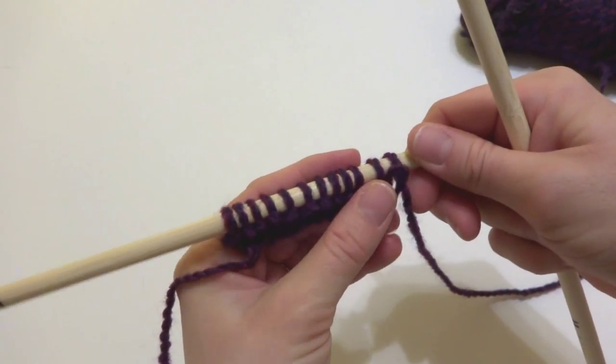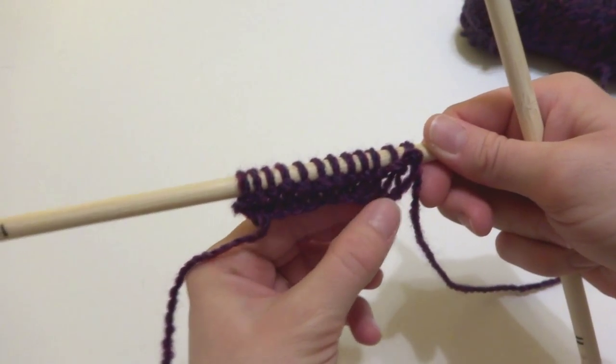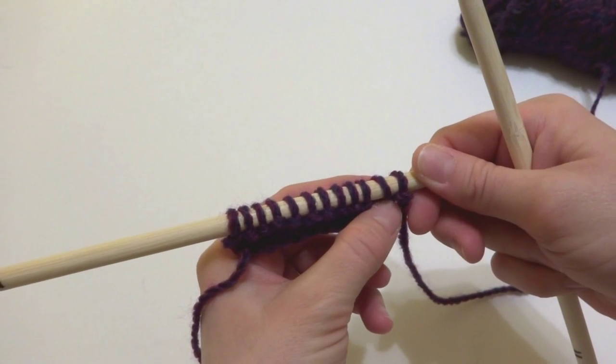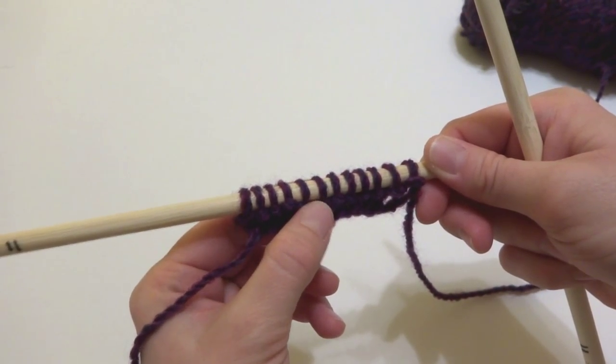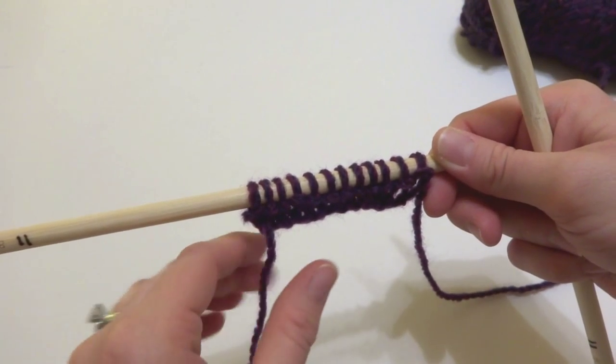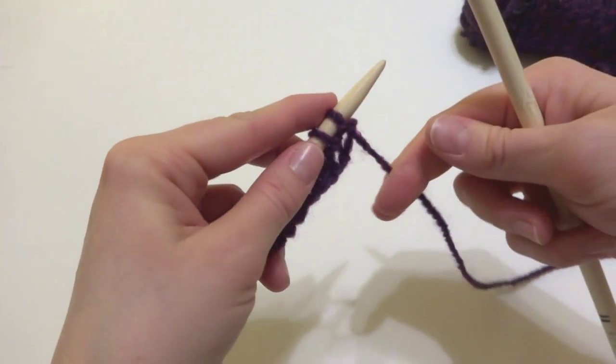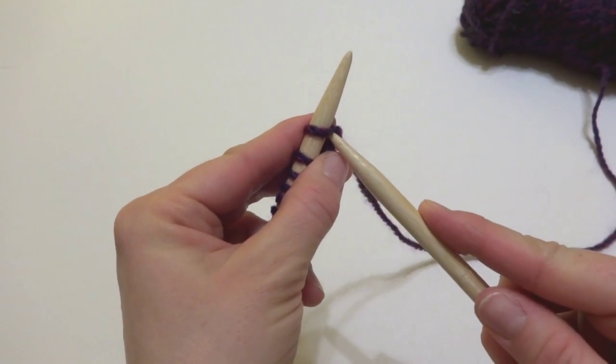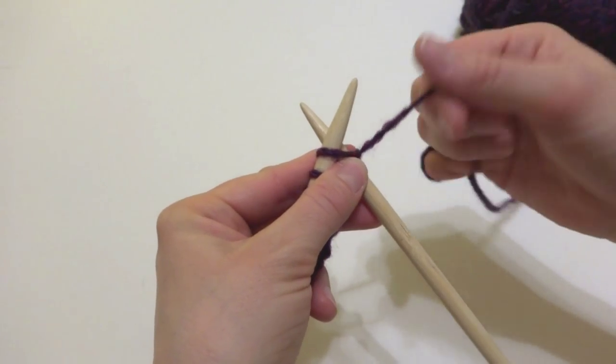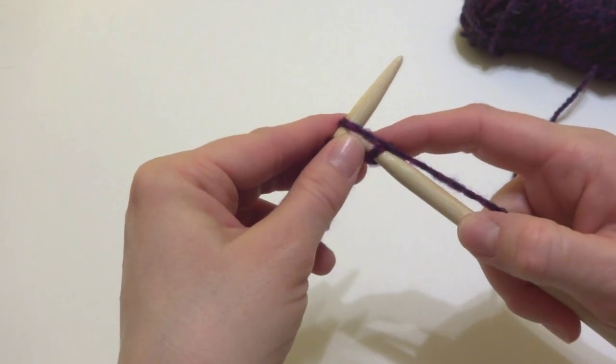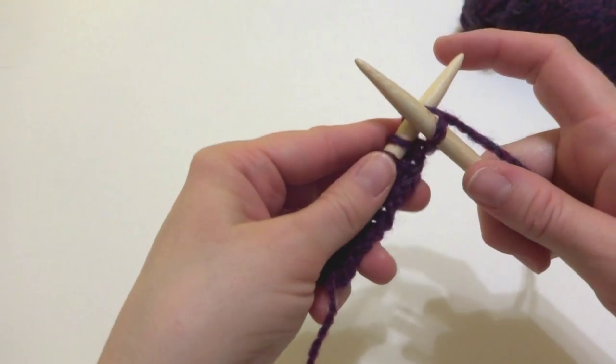I have here just a little row I've started. I cast on a few stitches and knit a row. What you'll want to do is knit the first stitch to give it a nice frame. Actually, I'll be knitting the very first and the very last stitch.